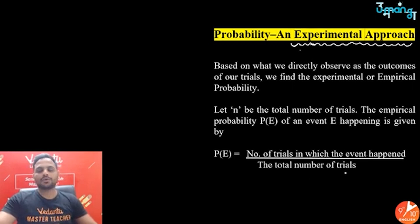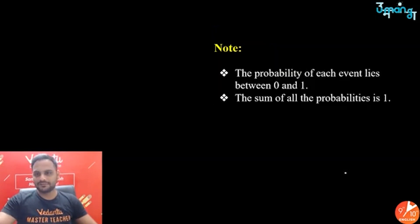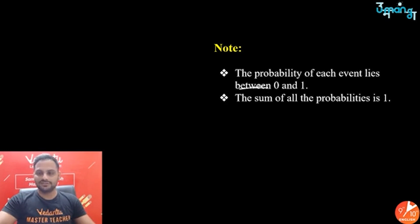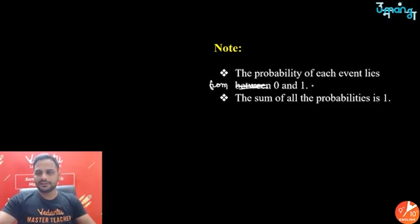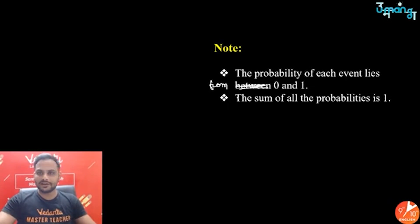Remember, probability always lies from zero to one — not between, but from, because probability can be zero and can also be one. Zero is included and one is included. Also, the sum of all probabilities is equal to one — not that important right now, but you will learn more about it in grade 10.